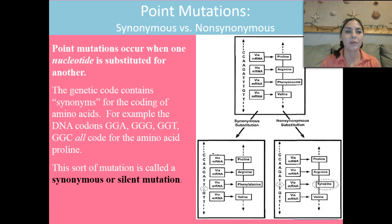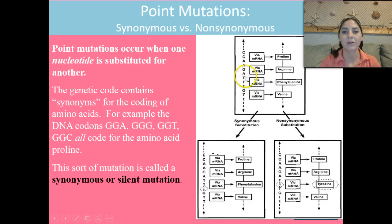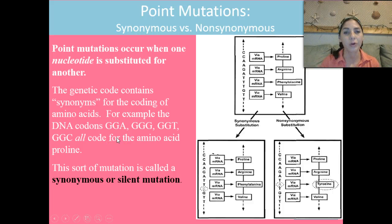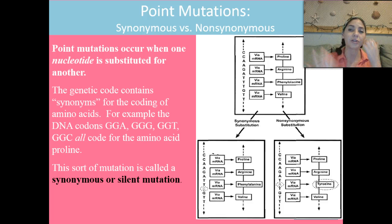In a point mutation, one nucleotide is swapped for another. So maybe we have TTT and it becomes TCT or TAT — a very small change at one point. Synonymous means the same — those codons are going to code for the same amino acid. For example, DNA codons GGA, GGG, GGT, and GGC all code for the same amino acid, proline. That type of mutation is called synonymous, or a silent mutation. If a point mutation occurs but the same amino acid is still coded for, it's synonymous and not going to do any harm — business is normal as usual.